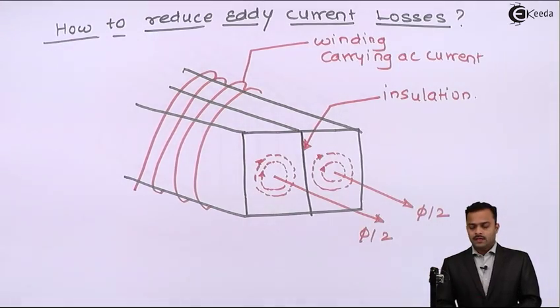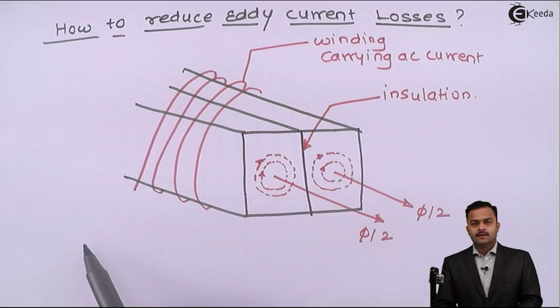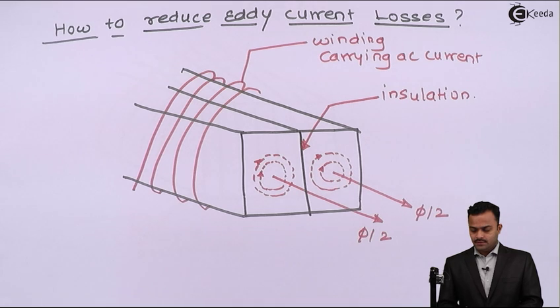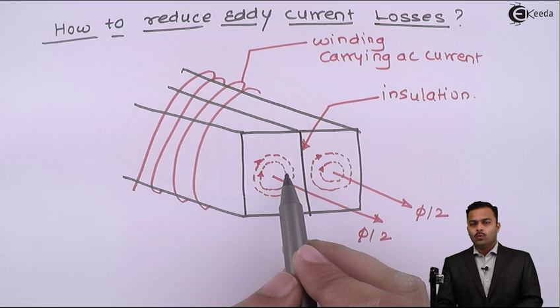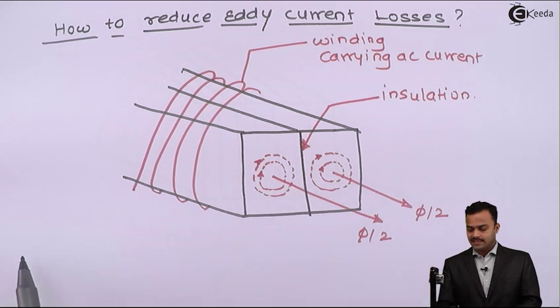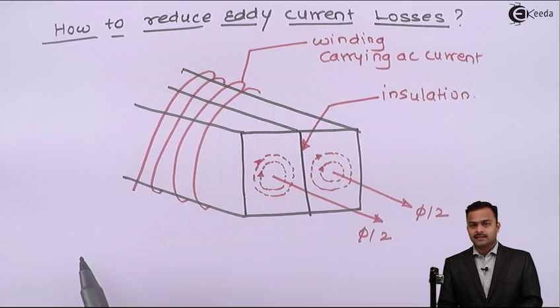We will split the core into two lengths so that the length will get half, and voltage induced in each section will be one-half of the earlier case, so that eddy current will reduce considerably.